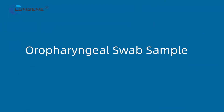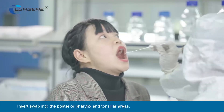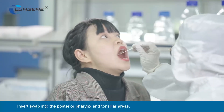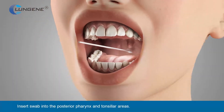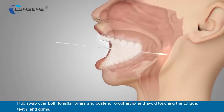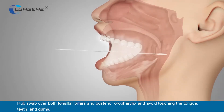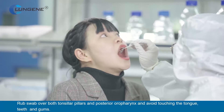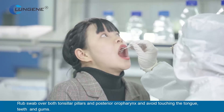Oropharyngeal Swab Sample. Insert the swab into the posterior pharynx and tonsillar areas. Rub the swab over both tonsillar pillars and posterior oropharynx, and avoid touching the tongue.